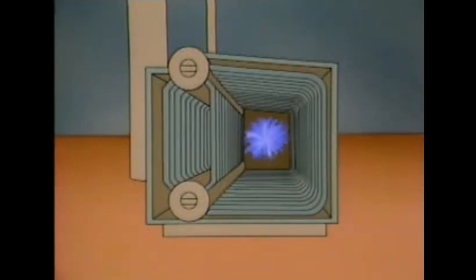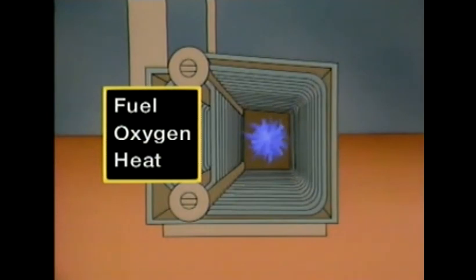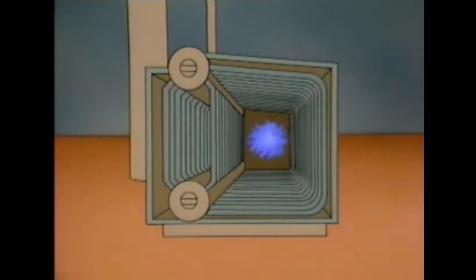One of the most common exothermic reactions is a combustion reaction — a reaction between oxygen and a fuel. We can see an example of a combustion reaction taking place in a boiler. A combustion reaction requires fuel, oxygen, and heat to get started. After it's started, it produces heat, which sustains the reaction, provided there's an adequate supply of fuel and oxygen. When a combustion reaction occurs, oxygen reacts with the fuel so rapidly that a fire is created.